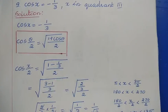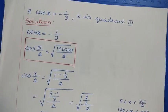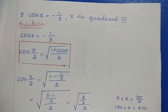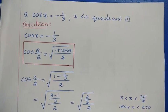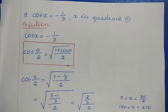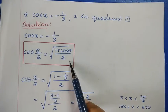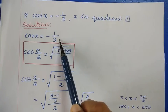Next, the 9th problem: cos x = −1/3, x in quadrant third. Here they have directly given the cos x value, so we can directly substitute into the formula. In the previous question tan x was given, so we used the Pythagorean identity to find cos x first.